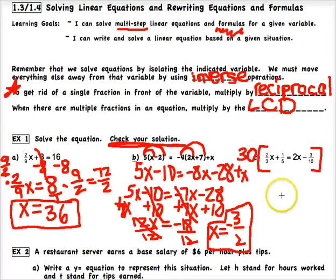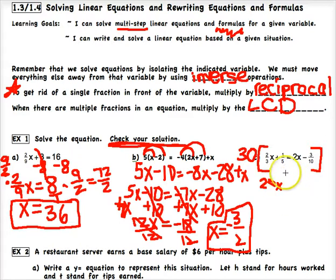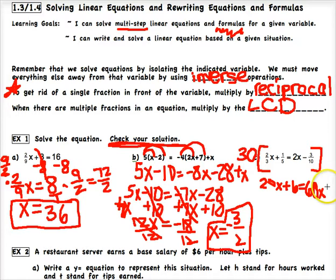Multiplying through by 30: 30 times 2/3 is 20, giving 20x. Then 30 times 1/5 is 6, giving plus 6. On the right, 30 times 2x is 60x. And 30 times negative 3/10 is negative 9. So the equation becomes 20x + 6 = 60x − 9 — no fractions, which is much cleaner.